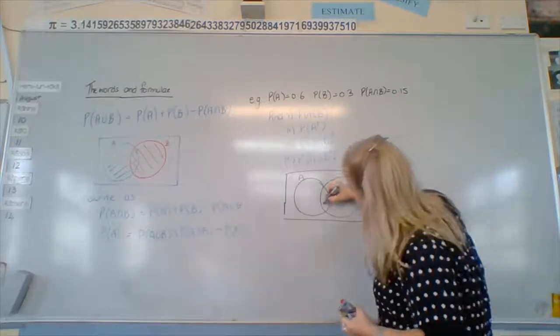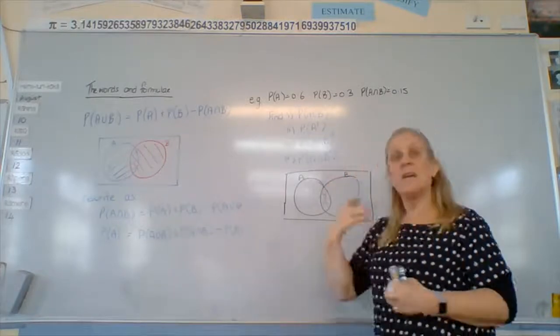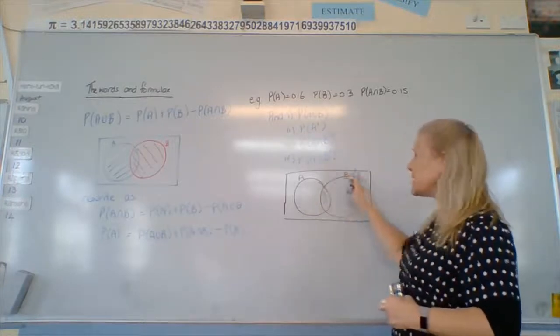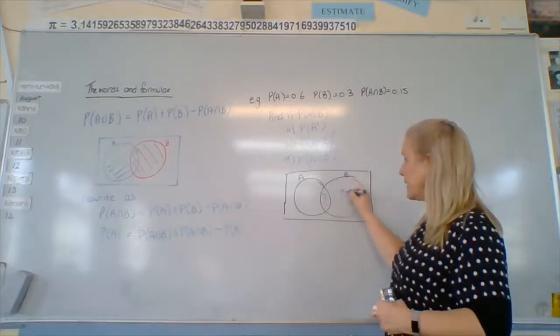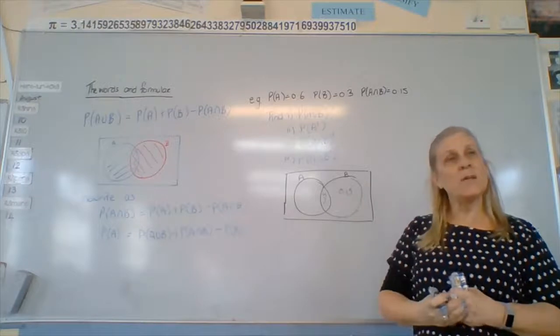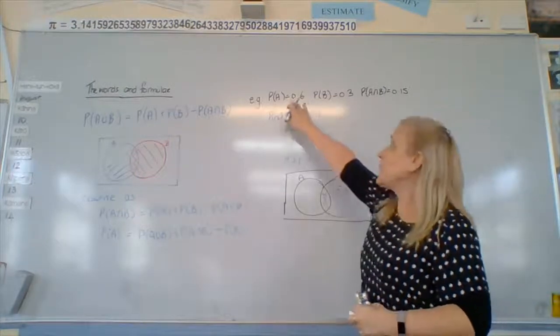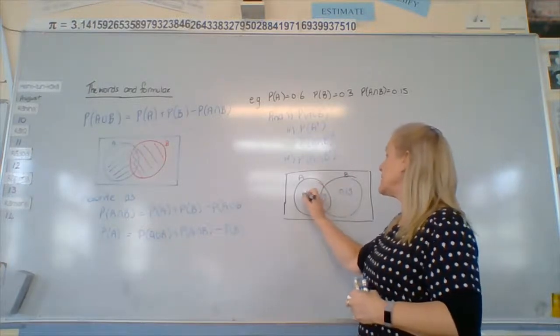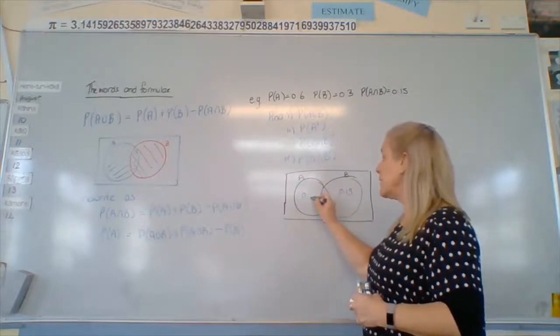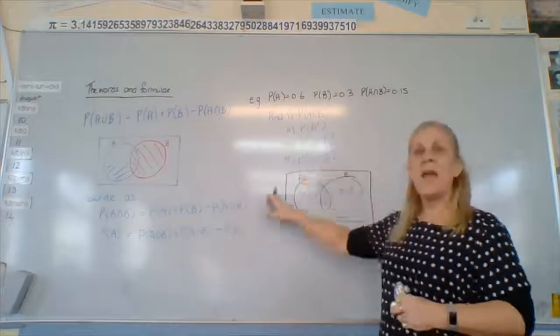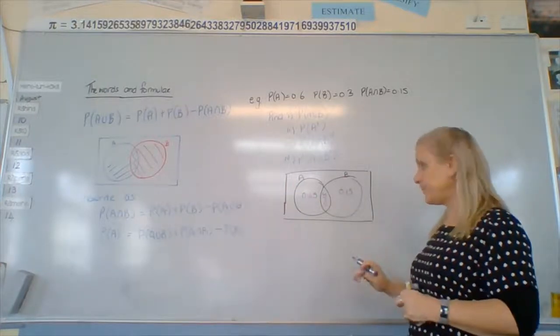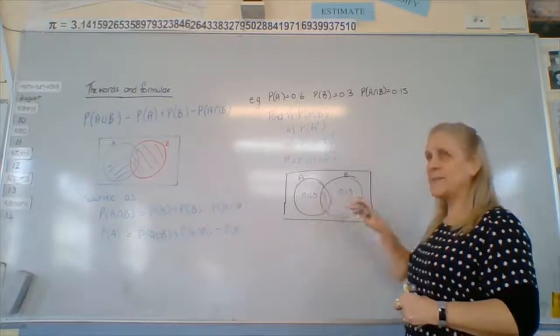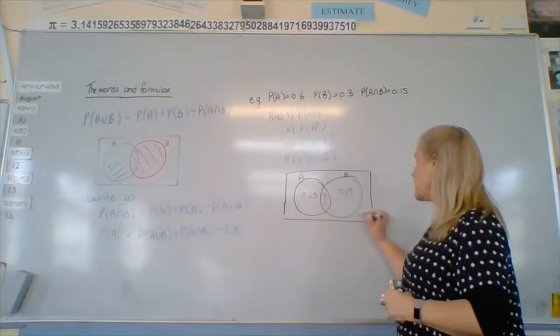The intersection goes in first because the other two include it. So the probability of B is 0.3. That includes that intersection. So what's left out here? 0.3 minus 0.15 or 0.15. And the same with A. It includes that 0.15. So therefore, 0.6 minus 0.15 is 0.45. And of course, the whole box adds up to 1. So what's on the outside? 0.25. Right? So 1 minus 0.45 is 55. Minus 15 is 40. Minus 15 is 25. So 0.25.